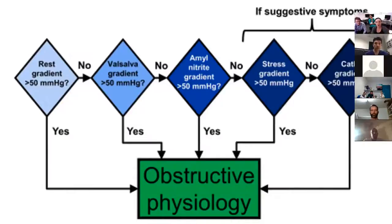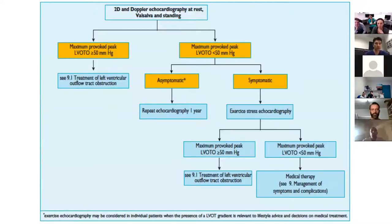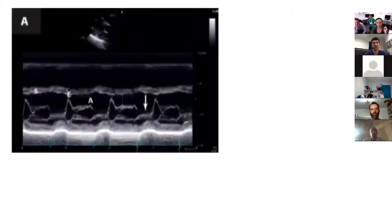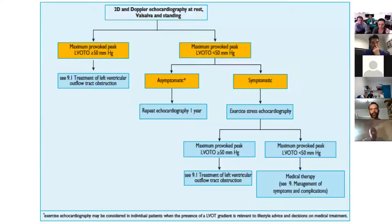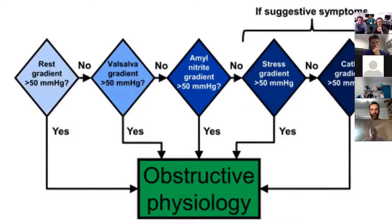This is demonstrating the process used to elicit the gradient in someone with HCM. Some have resting SAM, but in the rest you're inducing a physiological state that will cause obstruction. One way to induce it during exercise stress is to get the patient cycling their legs in the air while lying in bed — the same approach was discussed for mitral stenosis as well.